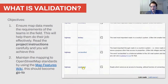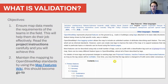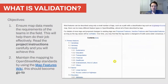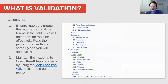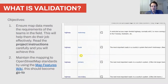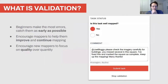Everyone's background here means we're well positioned to deal with geospatial data and spot errors in map data, so I'm confident of your ability. More broadly, the objective of validation — as well as maintaining quality — is to give mappers encouragement.